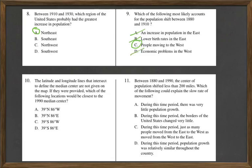10. The latitude and longitude lines that intersect. So here's an intersection point. To define the median center not given on the map, if they are provided, which of the following locations would be closest to the 1990 median center? So notice you have A is 39 degrees north, 86 west. And so I'm looking at these. The only difference is, is it northwest, northeast, southwest, or southeast?